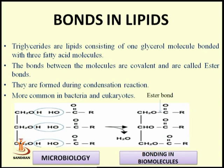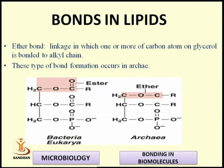The structure of an ester bond is represented as R-C(=O)-O-R. The CH₂OH groups of glycerol react with fatty acid molecules to form ester bonds, building chains in terpenoids and steroids. Ester bonds are present in bacteria, archaea, and eukaryotes. In archaea, the linkage involves one or more carbon atoms on glycerol bonded to alkyl chains. This type of bond also occurs in bacteria and eukaryotes.